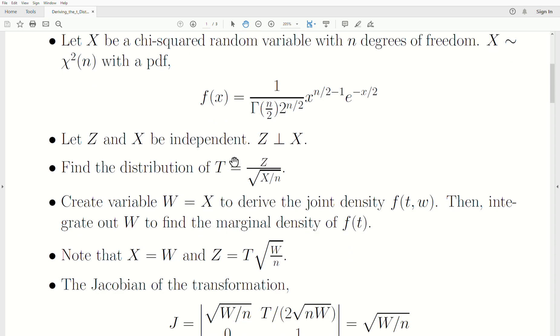So given these transformations, you can back solve for Z and X. So X is equal to W, and Z is equal to T times the square root of W over n.